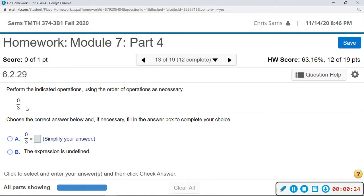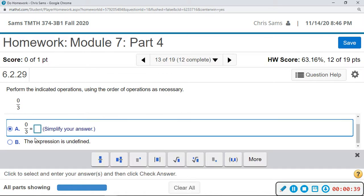All right, 0 divided by 3. So we can have 0 on the top, but we cannot divide by 0. 0 on the bottom is undefined. But I have 0 dollars, I'm going to divide it equally amongst 3 people. Each of those people are going to get 0 dollars, because I have nothing.